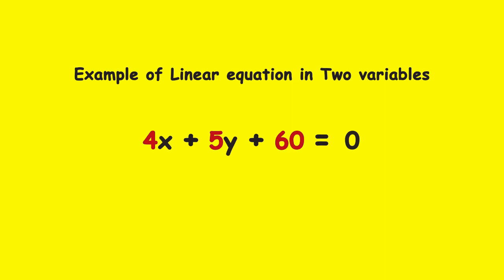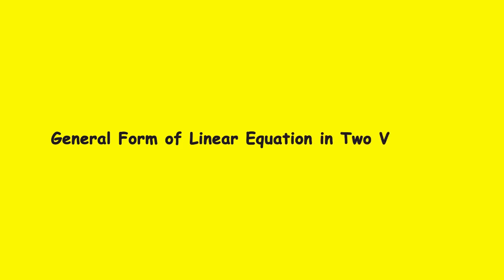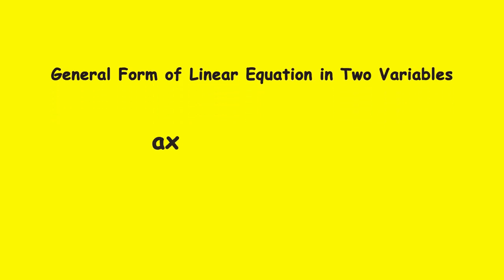Wherein 4, 5, and 60 are real numbers and x and y are the two variables. We have seen that the general form of a linear equation in two variables is Ax plus By plus C is equal to 0, wherein A, B, and C are the constants and x and y are the two variables, and together they all add up to 0.